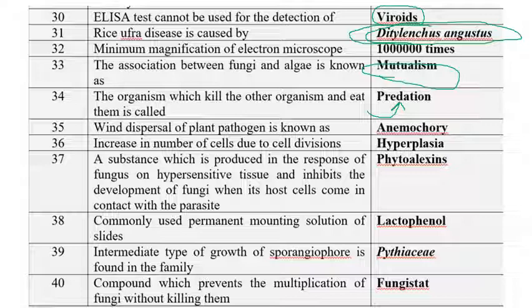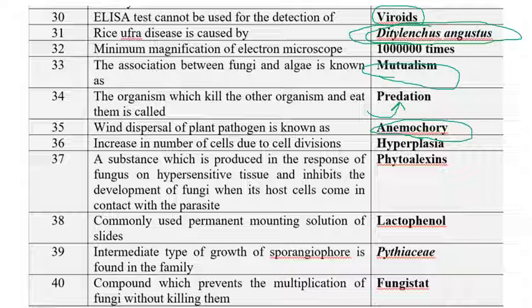Wind dispersal of plant pathogens is known as anemochory. Water dispersal is called hydrochory. Man-mediated dispersal is called anthropochory. Increase in the number of cells due to cell divisions is called hyperplasia, whereas increase in the size of cells is called hypertrophy.